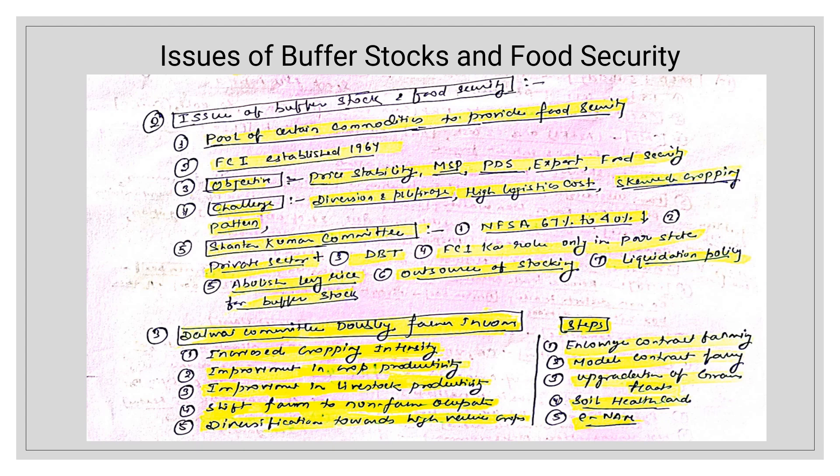Challenges of buffer stocks: first, diversion and pilferage — CACP noted that 40% of PDS food grains are pilfered or diverted to the open market. Second, high logistic cost. Third, skewed cropping pattern — MSP makes farming cereal-centric. The Shanta Kumar Committee report states that under the National Food Security Act, 67% of the population is covered, and it should be reduced to 40%. It recommends including the private sector in food grain management, implementing DBT, limiting FCI's role to poor states, abolishing levy rice, outsourcing stocking, and having a liquidation policy for buffer stocks to avoid wastage.